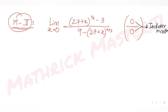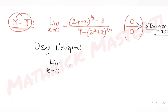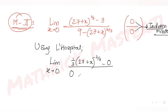Since we have an indeterminate form, I can apply L'Hôpital's rule — find the derivatives of numerator and denominator separately. The derivative of (27 + x)^(1/3) is (1/3)(27 + x)^(1/3 − 1) = (1/3)(27 + x)^(−2/3). The derivative of 3 is 0. For the denominator, derivative of 9 is 0, and derivative of (27 + x)^(2/3) is (2/3)(27 + x)^(−1/3). Now substituting x = 0 won't give 0.